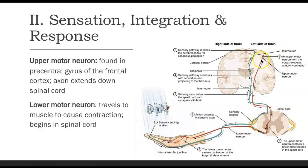We do that through an upper motor neuron, found in what's called the precentral gyrus of our frontal cortex — also known as the motor cortex. All of our motor neurons begin here and extend down through the spinal cord to the proper region, whether for the upper or lower limb, and eventually synapse in the spinal cord at the correct level to send the signal through a lower motor neuron, which travels through the body to the specific muscle to cause contraction.